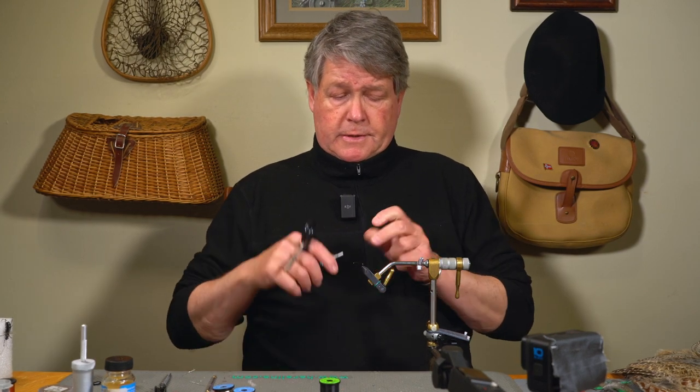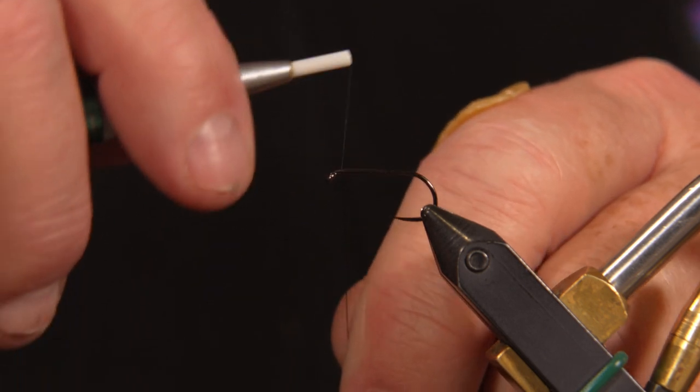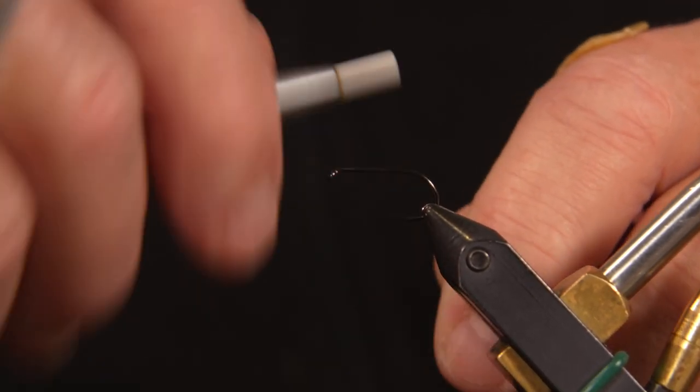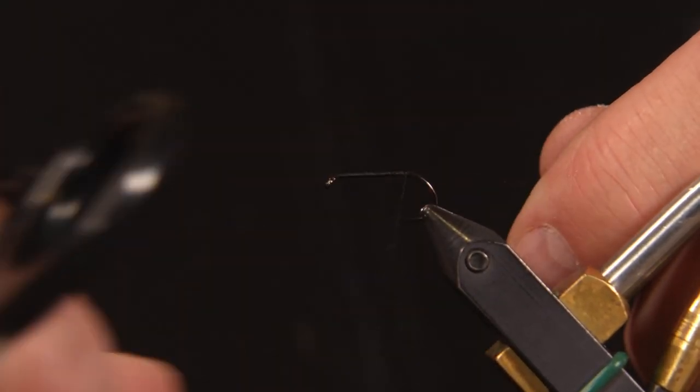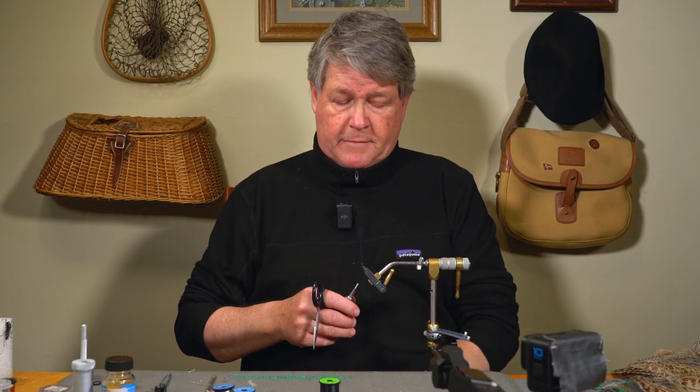So the first thing I want to do is attach my thread just behind the eye, giving myself room for the hackle to be tied in. I'm making touching wraps all the way back to just before the bend of the hook. I break off my thread.